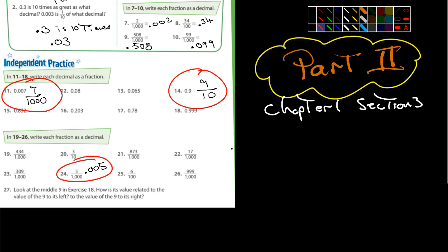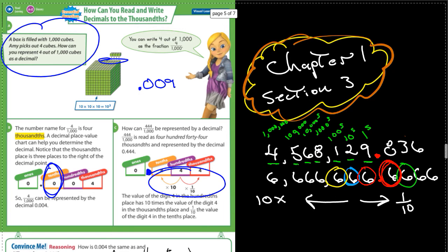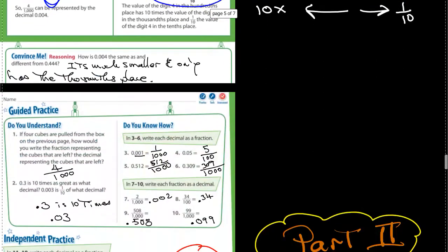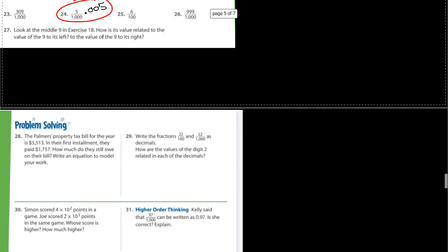So, for example, number 24 I did, and that's 5 over 1,000. So, let's see here. I think if you watch the first half, you should be good with that. So, anyways, part two here.